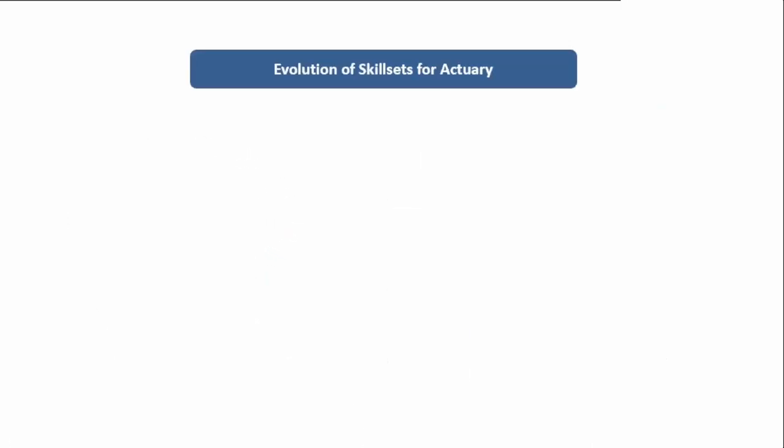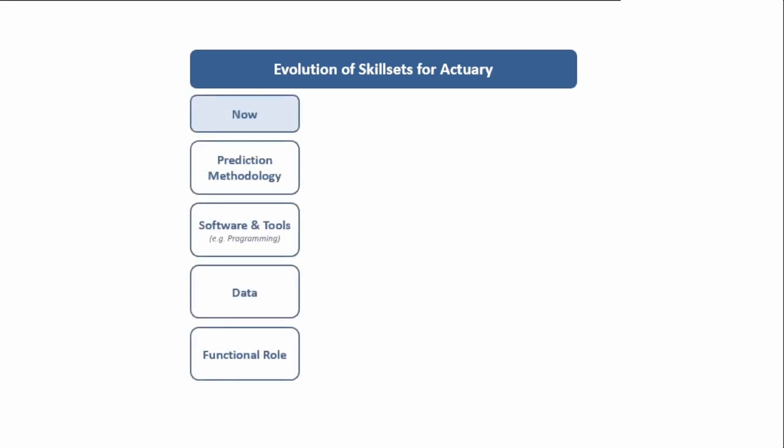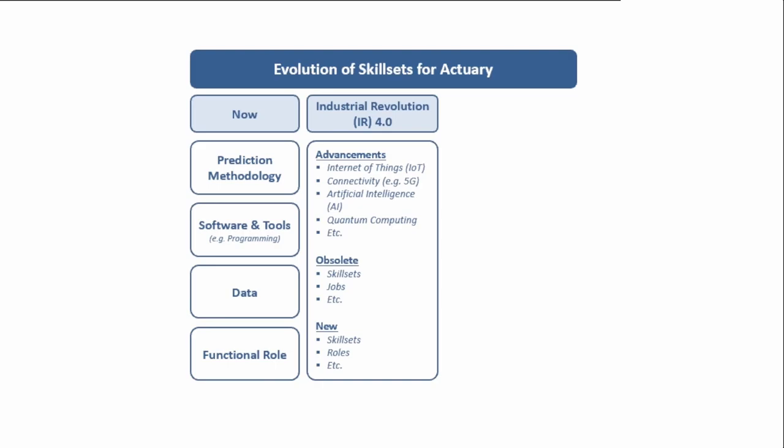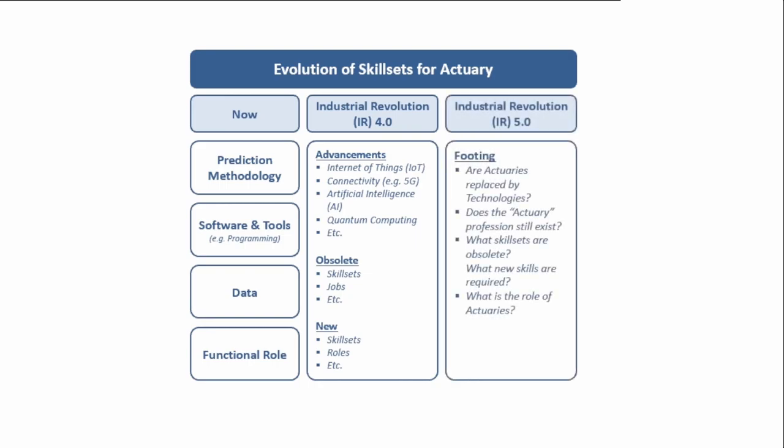There are four main areas in prediction analytics, namely prediction methodology, software and tools, data, and functional role. Advancements in technology such as AI in Industrial Revolution 4.0 will replace or obsolete some skill sets and there will be demand for new skill sets. Actuaries need to embrace these changes to upgrade and reposition ourselves to stay relevant in Industrial Revolution 5.0.